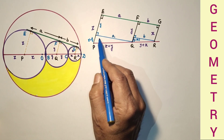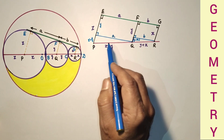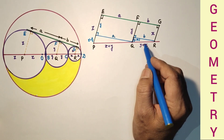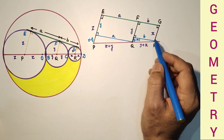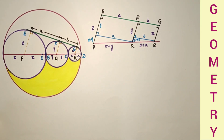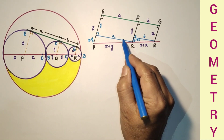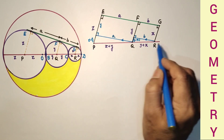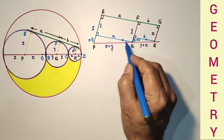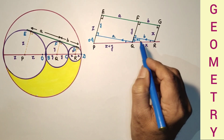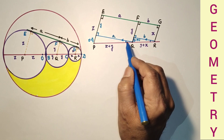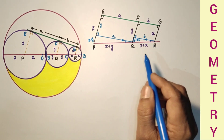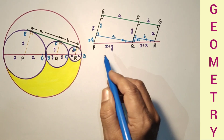We can say that these two triangles are similar, because this line is parallel to this one and this is a transversal. So this angle equals this angle. This angle is 90 degrees and this angle is 90 degrees. These two angles are equal, so by the AA test of similarity, these two triangles are similar.